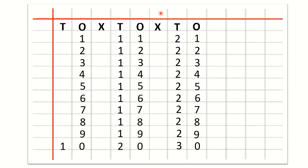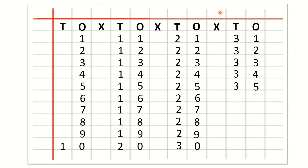Now children we will learn how to write 31 to 40 counting with the method of 10s and 1s. So, after O we will write a cross and we will not write anything under cross. After the cross we will write T for 10s and O for 1s. Now we will write: 3,1 — 31; 3,2 — 32; 3,3 — 33; 3,4 — 34; 3,5 — 35; 3,6 — 36; 3,7 — 37; 3,8 — 38; 3,9 — 39; 4,0 — 40.